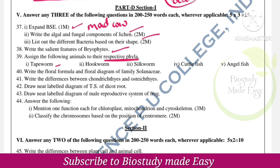Write the algal and fungal components of lichen — phycobiont. List out the different bacteria based on their shape. Write salient features of bryophytes. Assign the following animals to respective phyla: tapeworm — Platyhelminthes; hookworm — Aschelminthes; silkworm — Arthropoda. Cuttlefish and angelfish — phylum Chordata, class Pisces.